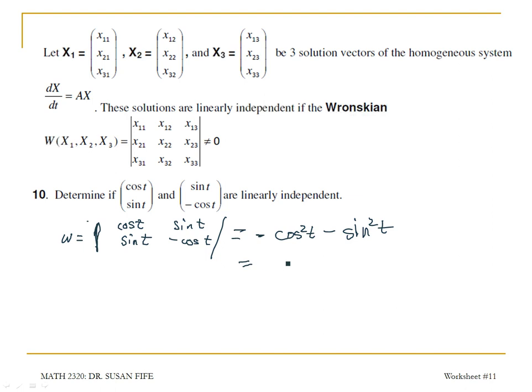And here I could factor out a negative 1 to give me cosine squared t plus sine squared t. This is one of our Pythagorean identities.